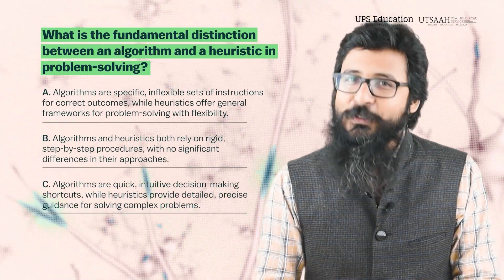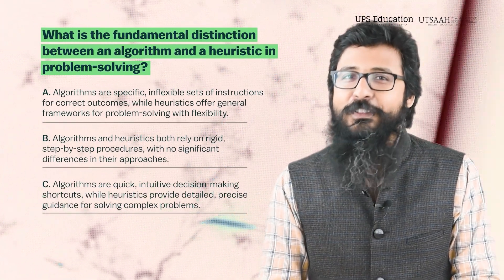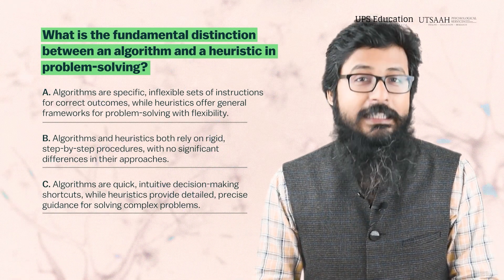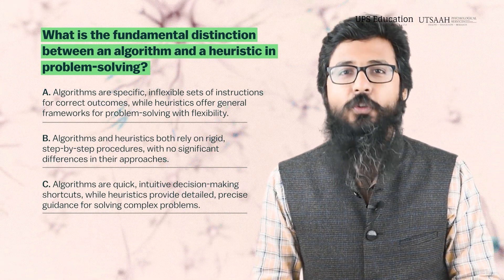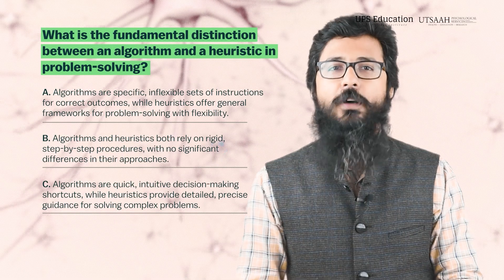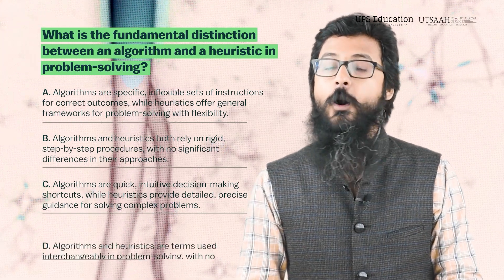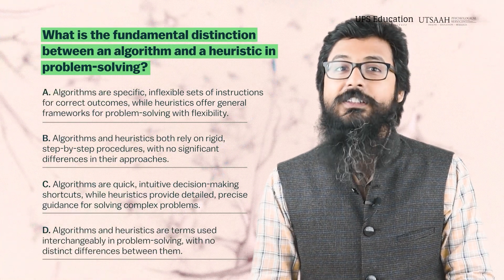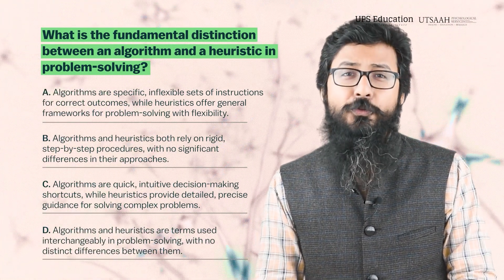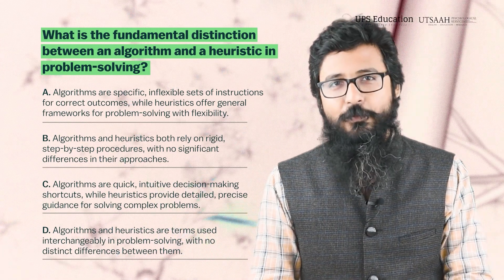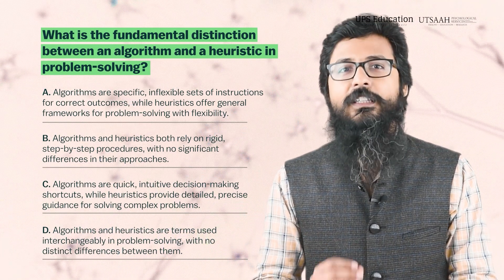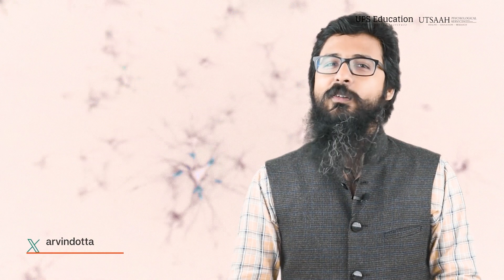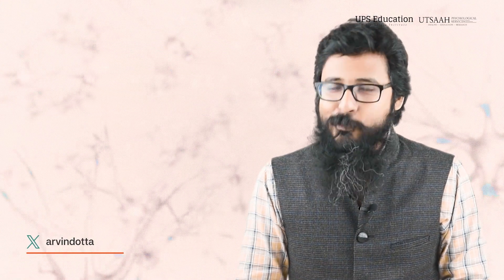Option C: algorithms are quick, intuitive decision-making shortcuts while heuristics provide detailed, precise guidance for solving complex problems. Option D: algorithms and heuristics are terms used interchangeably in problem solving with no distinct differences between them.